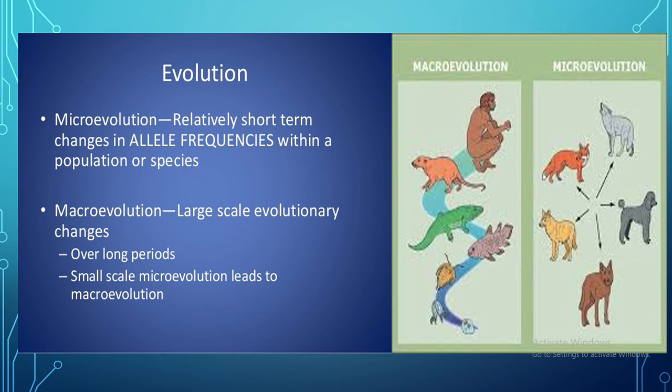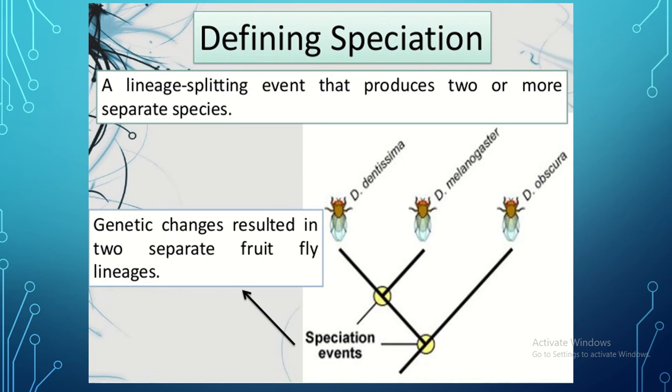Macroevolution occurs at a larger scale over a longer period of time. For example, fish evolving into class Amphibia, Amphibia evolving into class Reptilia, and reptiles evolving into mammals — a huge group of organisms evolving from one class to another over a large period of time. A lineage splitting event that produces two or more separate species is known as speciation.